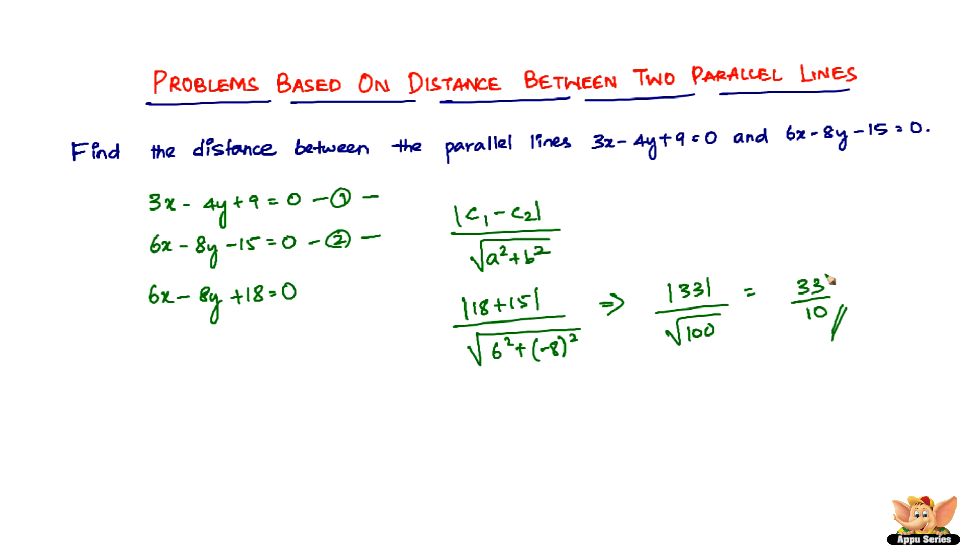So 33 divided by 10 is the required distance between the two lines 3x minus 4y plus 9 equal to 0 and 6x minus 8y minus 15 equal to 0, which are parallel to each other.